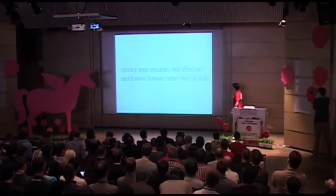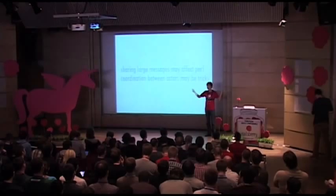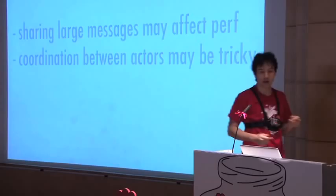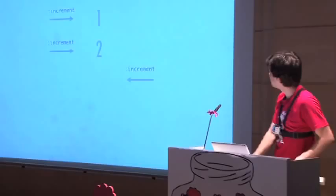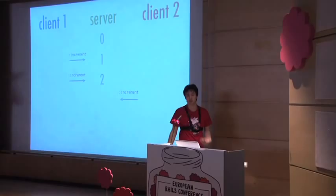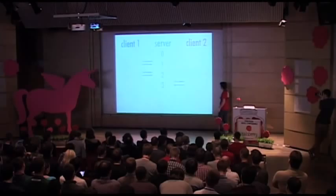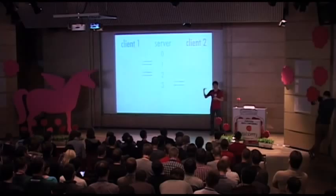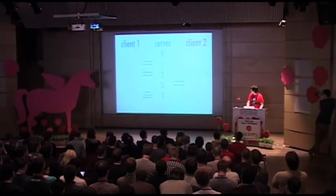Large messages, depending on the system, may affect performance. Coordination between actors may also be tricky — since everything works with messages, it's very hard for two clients to see exactly the same value. Messages come as a queue: the server has an inbox and processes messages one by one. It's hard to synchronize because the server needs to go through the entire queue.